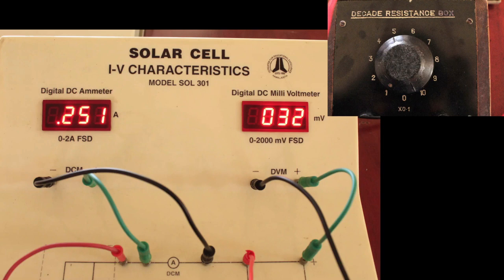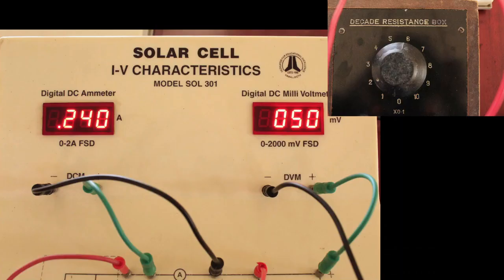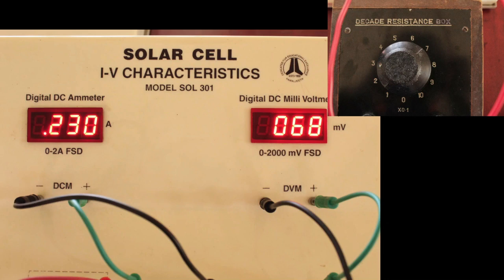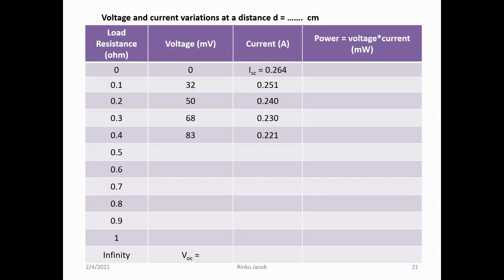Now we turn the dial of the resistance box to 0.1 ohm, and the corresponding reading on the voltmeter is 32 millivolt. Now we turn the dial to 0.2 ohm, and the voltmeter and ammeter readings are 50 millivolt and 0.240 ampere respectively. Now the dial is set to 0.3 ohm, and the ammeter shows 0.230 ampere and the voltmeter shows 68 millivolt. Now the dial is set to 0.4 ohm, and the ammeter shows 0.221 ampere and the voltmeter shows 83 millivolt. All these values are tabulated.